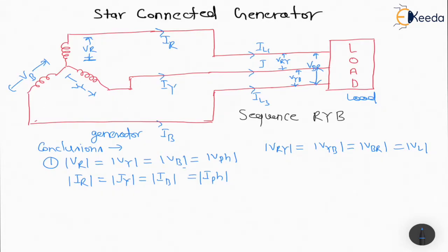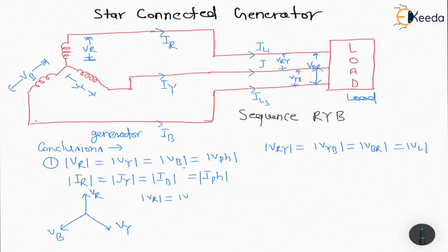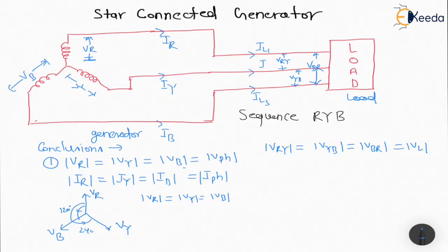We know for the balanced condition of load — drawing here for any parameter, either line or phase — if this is Vr, then this will be Vy and this will be Vb. For the vectors to be balanced, their magnitudes will be the same, and they should have a 120 degree angle with each other. The sequence is RYB.